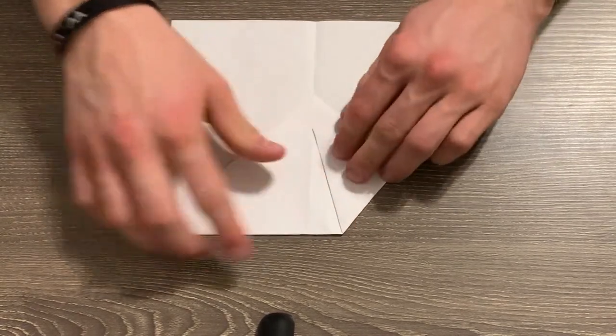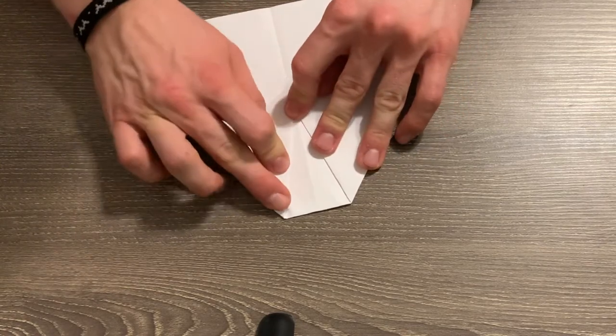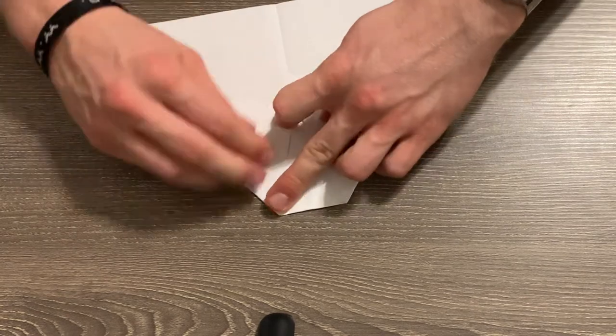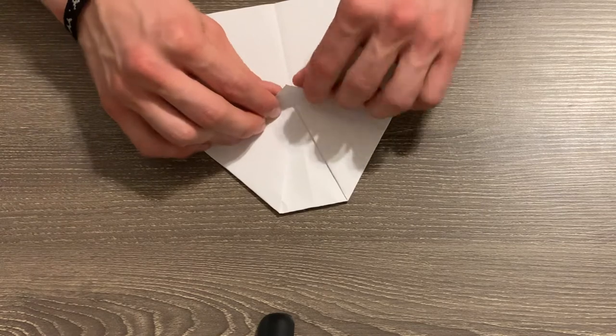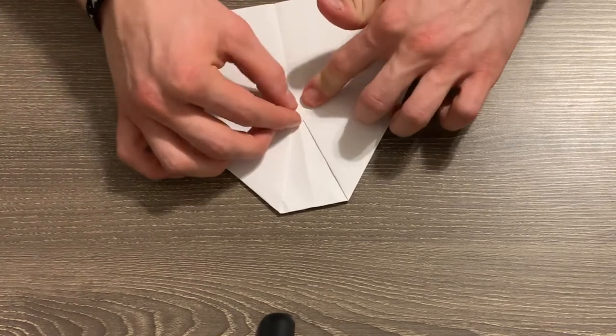Make a good crisp fold here, and just make sure that this side looks the same. Now in order to keep this here and keep it from unfolding while it's in the air, take and fold this triangle up to hold those wings in place.